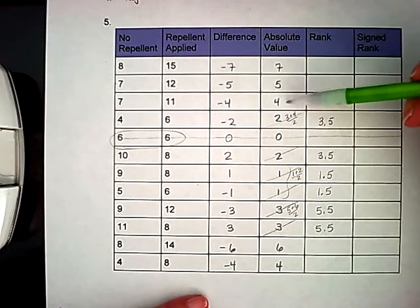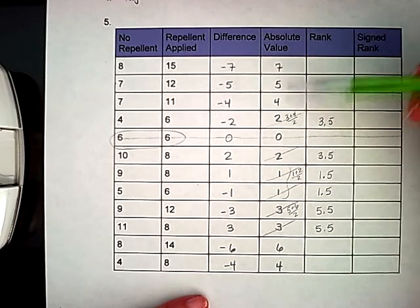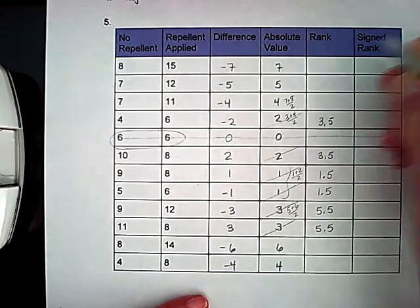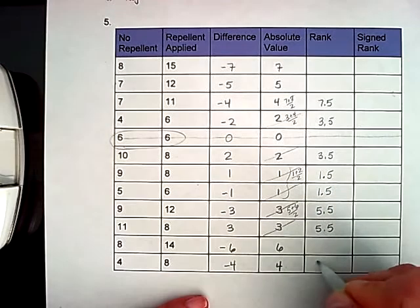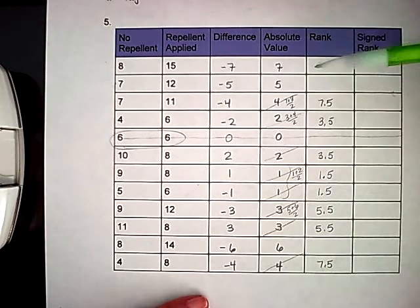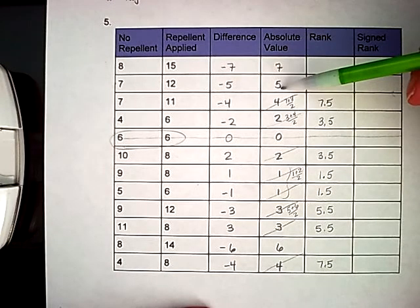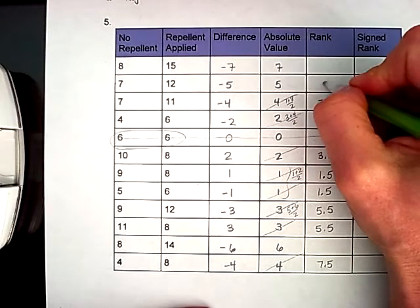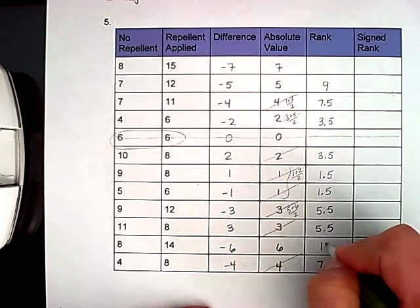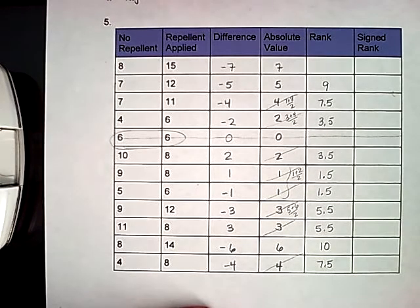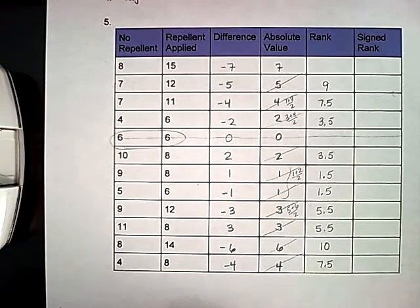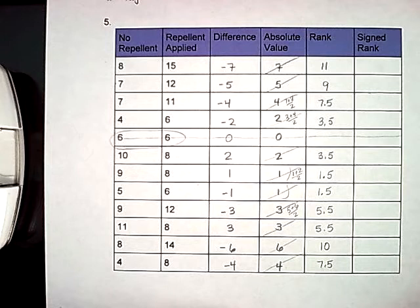Again, I have two fours. So I'm going to repeat that process with seventh and eighth place divided by two is going to give me a ranking of seven and a half and seven and a half. So that's seventh place and eighth place. Now you can see I only have one five. So the number five gets ninth place all to itself. I have one six that gets a ranking of 10 all to itself. And my last ranking has the absolute value of seven. So that's my 11th place.